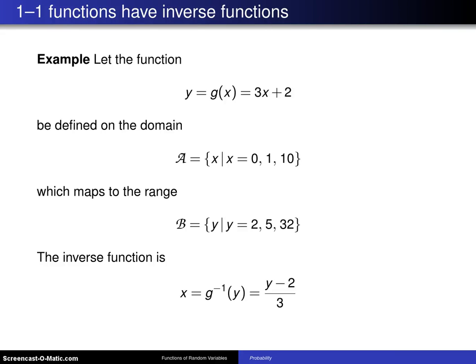One-to-one functions have inverses, and this is one example of finding an inverse. Let the function y equals g of x be 3x plus 2. This is an easy function. It is a line with slope 3 and intercept 2.